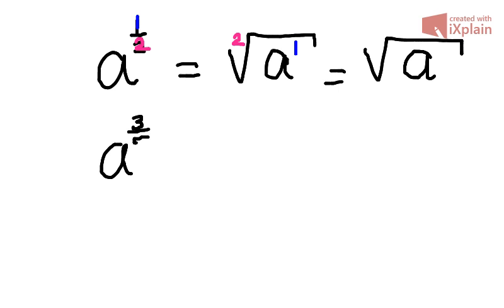So say we had a to the power of three fifths. So we know it's a root straight away because of the fraction in the exponent, a to the power of top number is the immediate exponent,